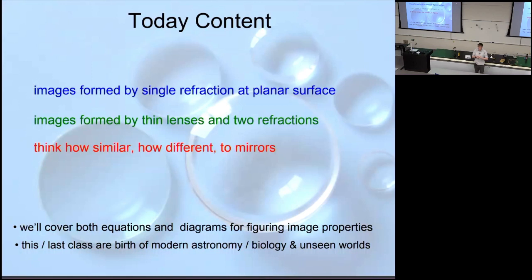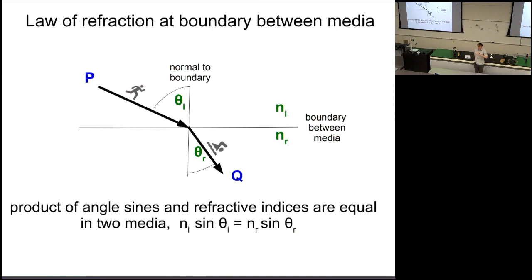For both single refraction and lens refraction, we'll be doing ray tracing and using formulas to describe the images. Understanding refraction by lenses was the basis for developing the telescope and the microscope, which led to breakthroughs in modern biology and modern astronomy.